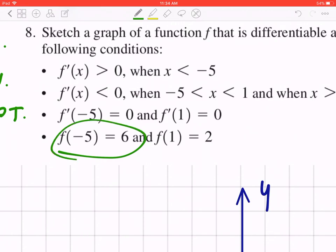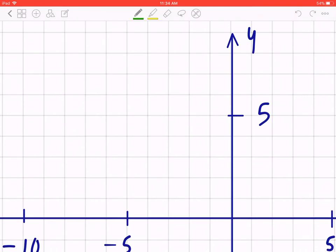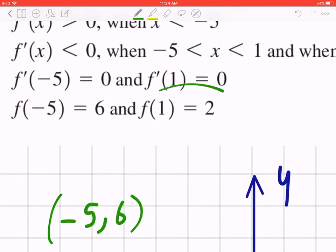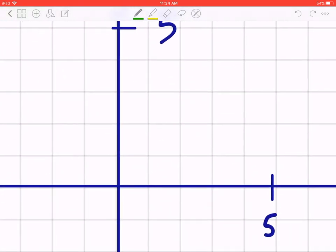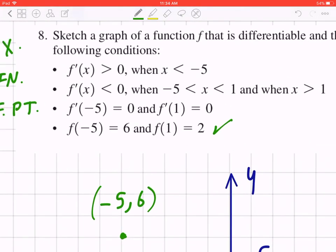So if you look at the last feature, f of negative 5 is 6, f of 1 is 2. This means the point negative 5, 6 is on the graph. So go left by 5, up by 6 and you label this point. Likewise, if you look at f of 1 equals 2, the point 1, 2 is part of the graph. Go right by 1, up by 2. So put a check mark next to the fourth condition, that one is done.